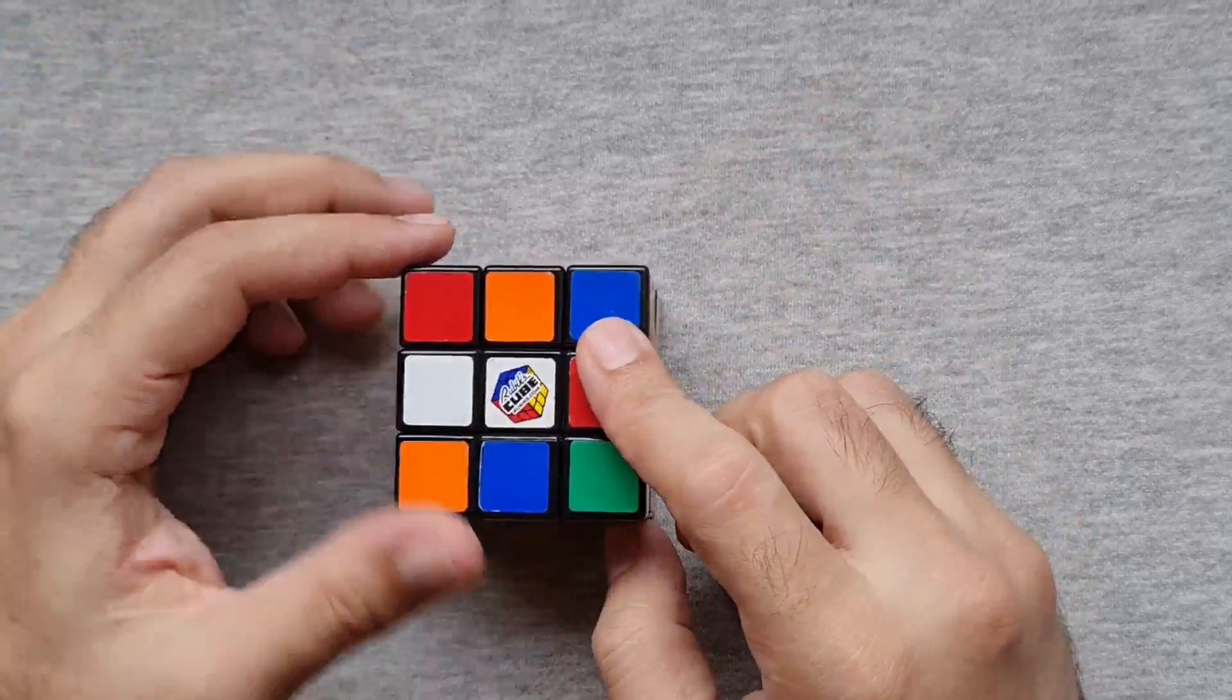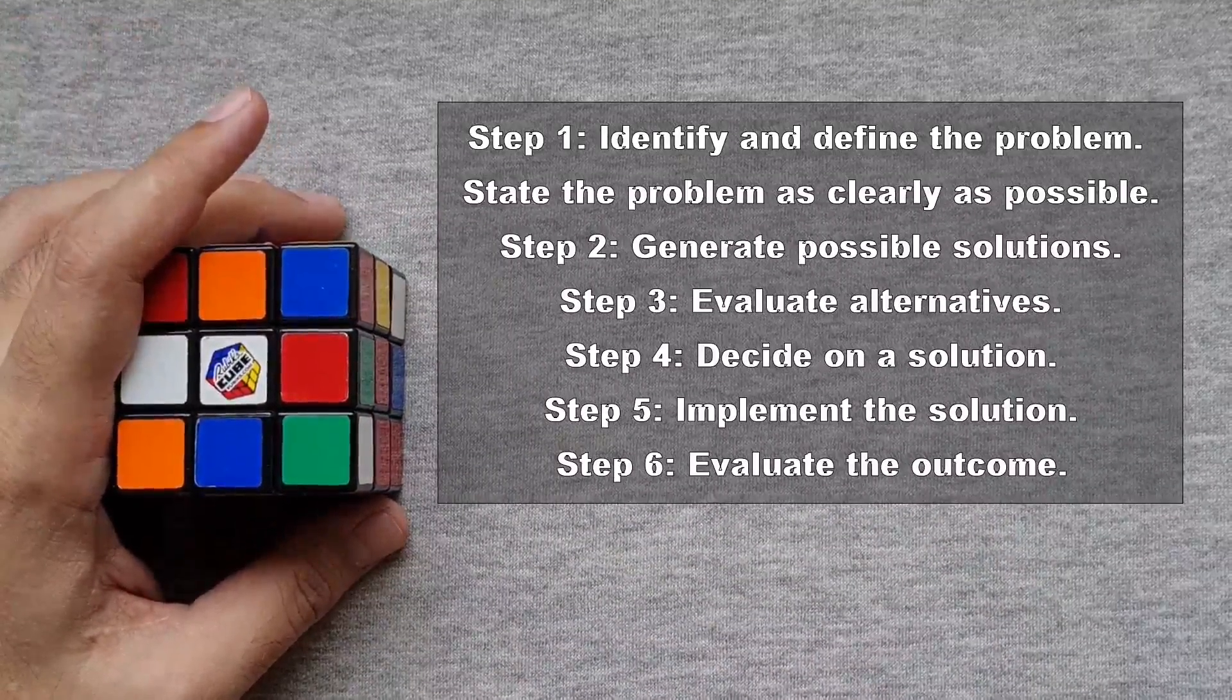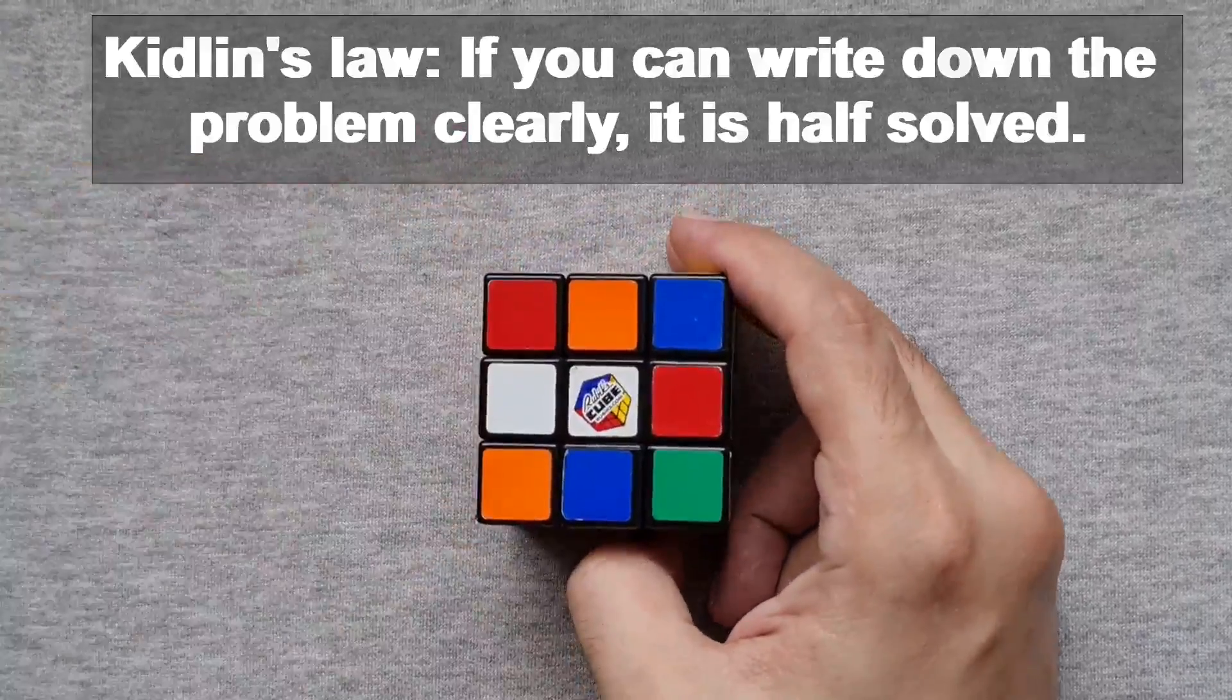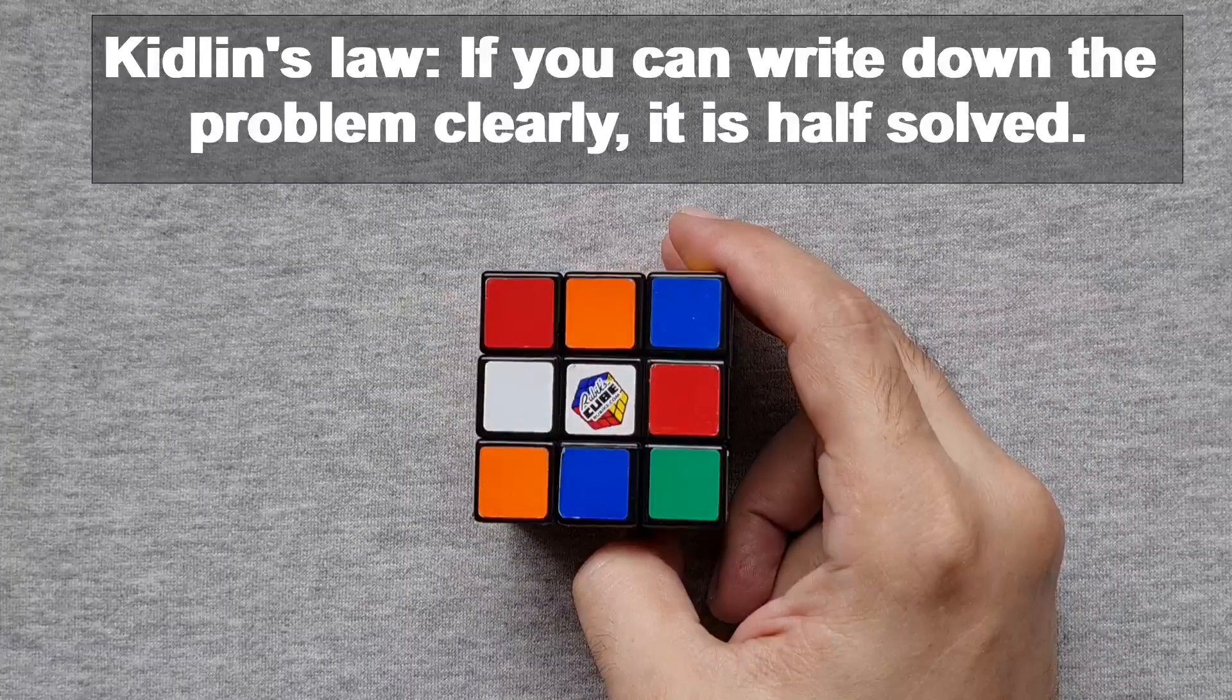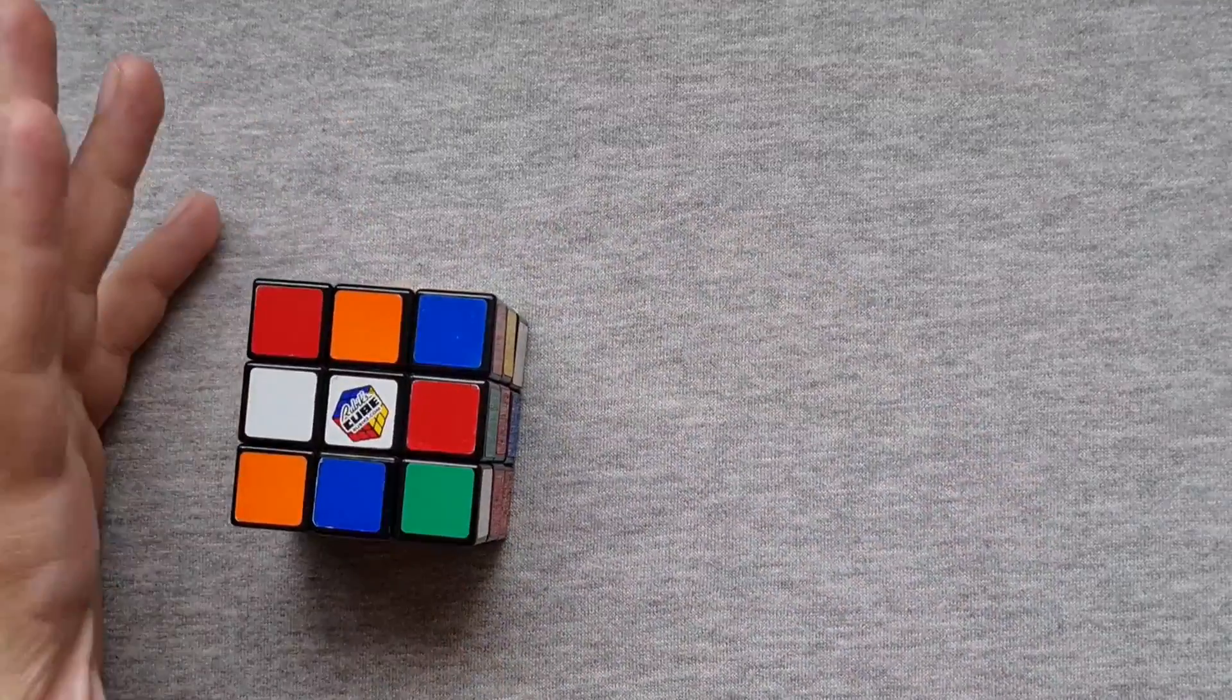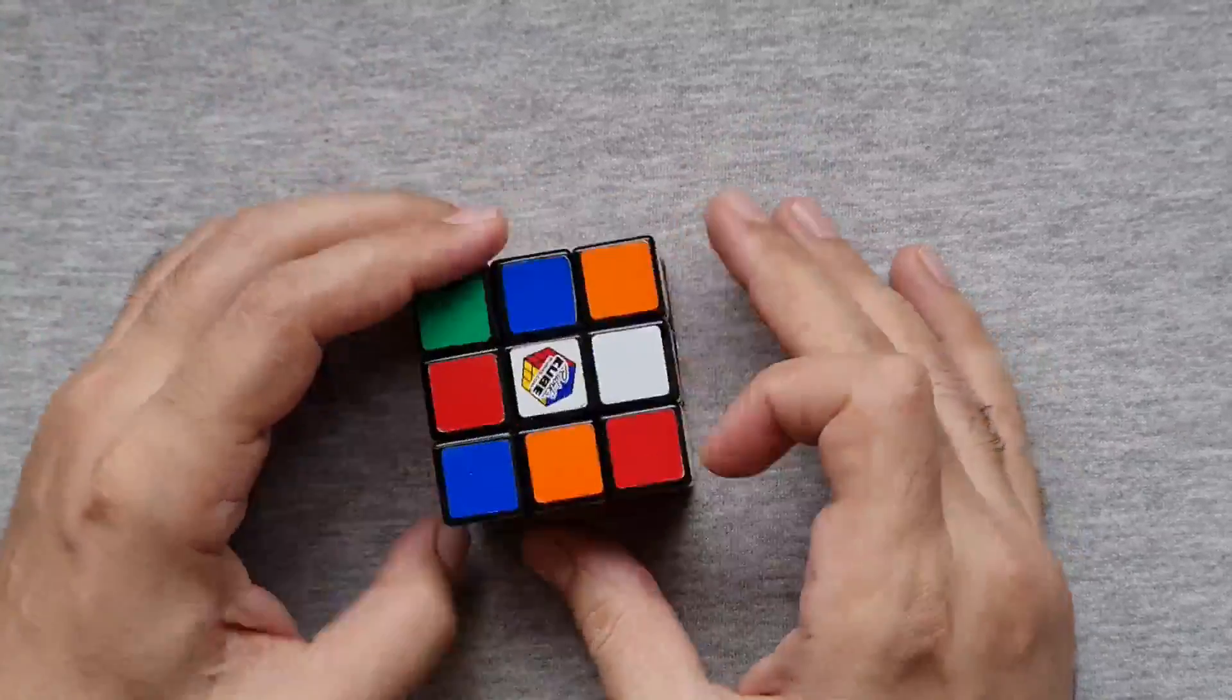Now there are six steps to problem solving, which are over there. The first is to identify and define the problem. Kindlin's law is that if you can write the problem down clearly, then the matter is half solved. My problem is I have no idea how to solve this thing, or I had no idea how to solve this thing.